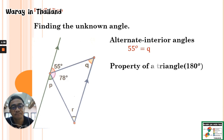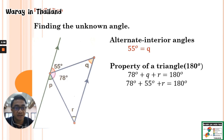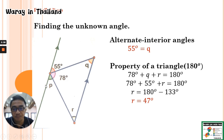Next, we use the property of a triangle: the sum of the interior angles equals 180 degrees. Since angle Q is 55 degrees, we can find angle R. We have: 78 plus angle Q plus angle R equals 180 degrees. Transposing, we get 180 minus 133, so angle R equals 47 degrees.